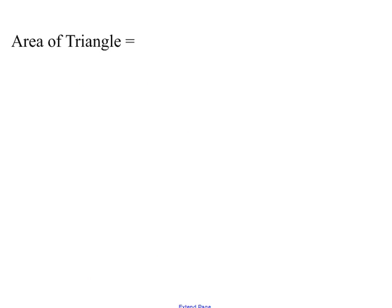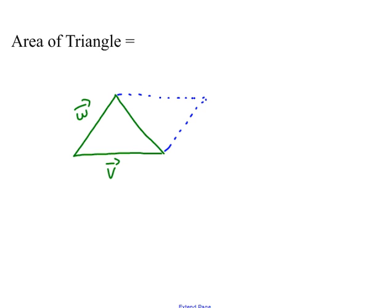The area of a triangle is half the area of the corresponding parallelogram. So if V and W are two side vectors of the triangle, the area of the triangle is one half times the magnitude of W × V — the magnitude of the cross product, not the cross product vector itself.